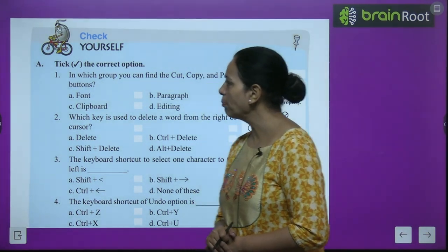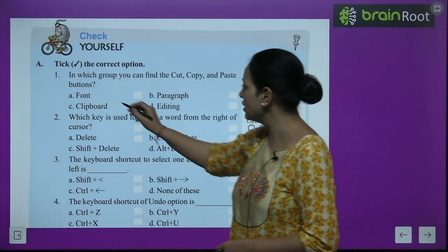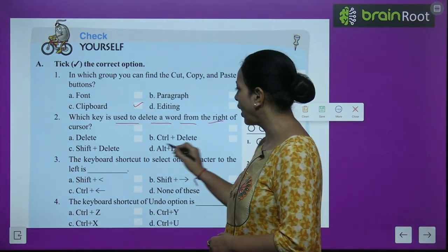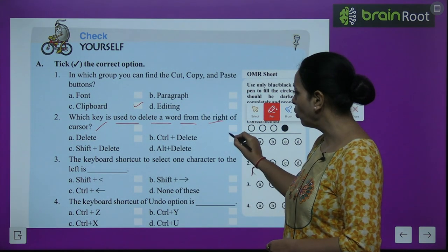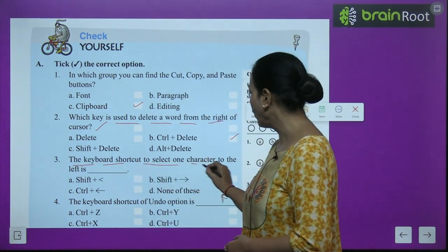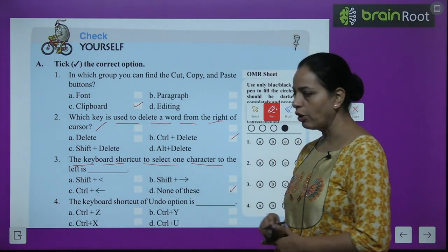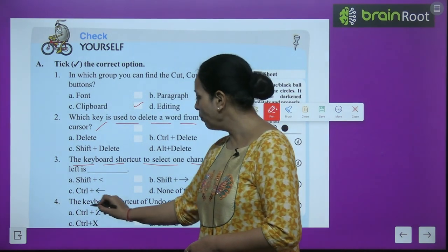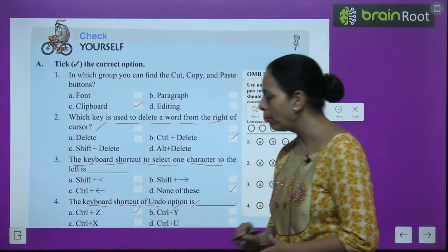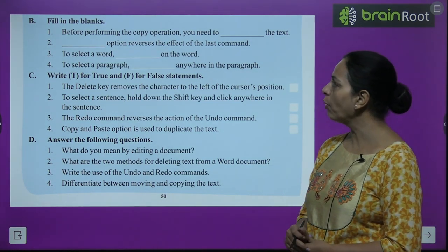Exercise Part A — Take the correct option: First, in which group can you find the Cut, Copy and Paste buttons? — Clipboard. Second, which key is used to delete a word from the right of the cursor? — Ctrl+Delete. Third, the keyboard shortcut to select one character to the left — None of these. Fourth, the keyboard shortcut of Undo option — Ctrl+Z.